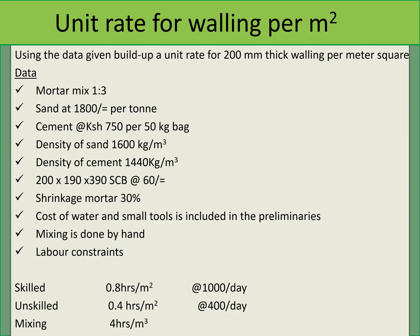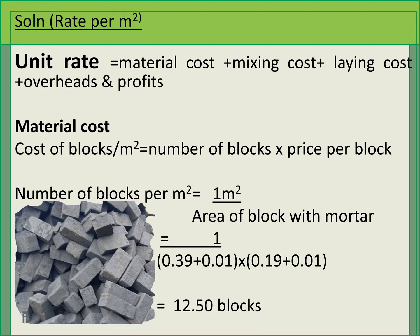Labor constraints: a skilled laborer will do one meter squared in 0.8 hours and we shall pay him 1000 shillings per day. An unskilled laborer will construct one meter squared in 0.4 hours and we shall pay him 400 shillings per day. For mixing, it shall take four hours to do one cubic meter of mortar. The unit rate for walling shall equal material cost plus mixing cost plus laying cost plus overheads and profit.